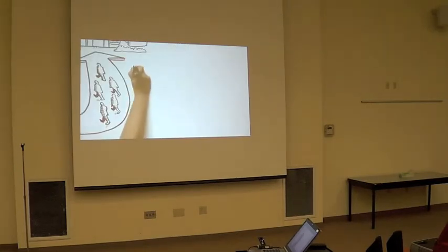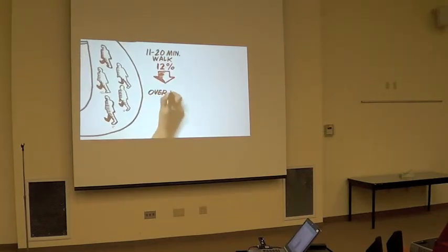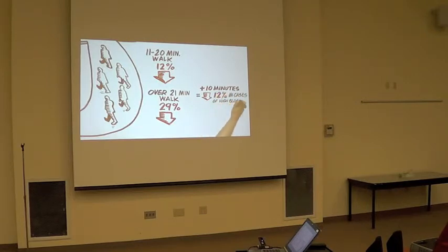And what they found is under 10 minute walk, no difference. 11 to 20 minute walk, 12% reduction in rates of high blood pressure or hypertension. And over 21 minute walk, a 29% decrease in rates of high blood pressure. So the authors calculated that for every increase of 10 minutes in your walk to work, there was a 12% reduction in the likelihood of getting high blood pressure.